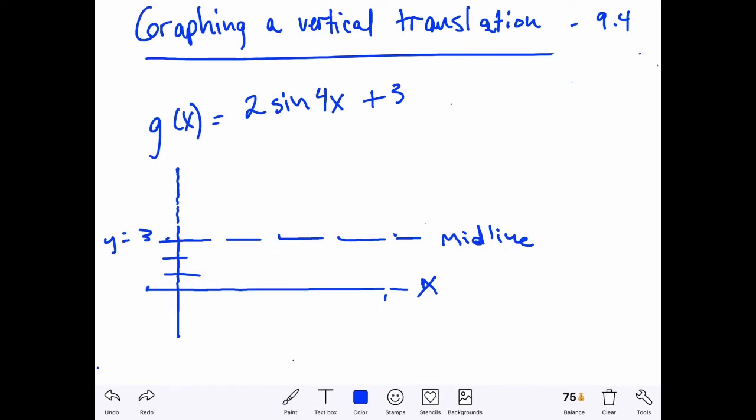Once we've done that we then want to identify other transformations. So we know that one was up three. Well that's our amplitude, which is the absolute value of a, which is the absolute value of two, which is two.